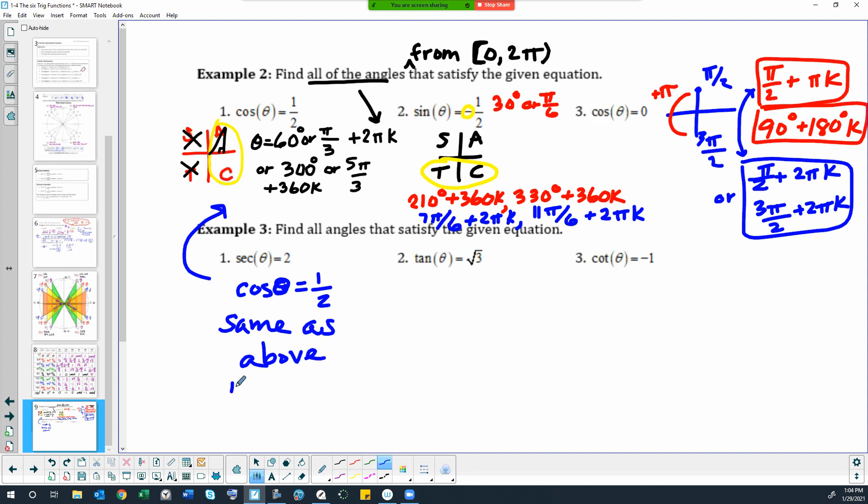And if you wanted to write it out, I guess you could. So pi thirds plus two pi k and then five pi thirds plus two pi k. Or if you wanted it in degrees, 60 plus 360k. The other one was 300.